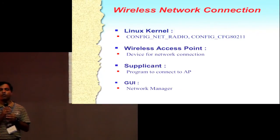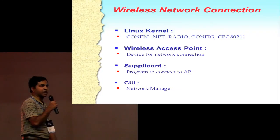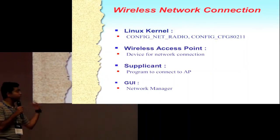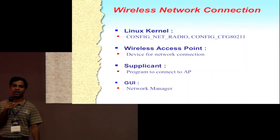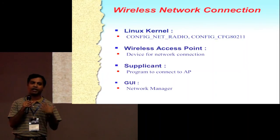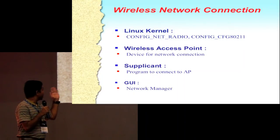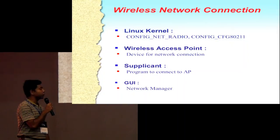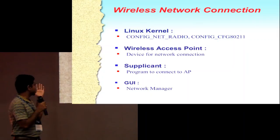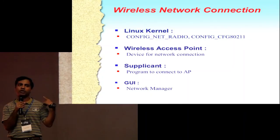If I want to get Wi-Fi running on a Linux-based laptop, what do I need? You need the Linux kernel. Some things are enabled by default in any latest Linux kernel distribution. You need to have the radio parameters so that your Wi-Fi, your Bluetooth, and all radios can work. There is a term called CFG 802.11, which is a recent development in Wi-Fi, and we'll talk about this in detail.